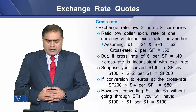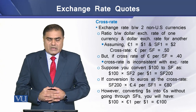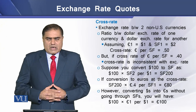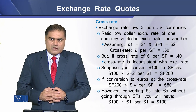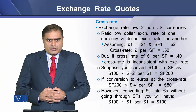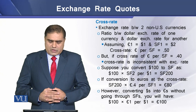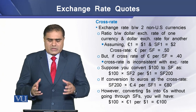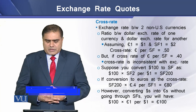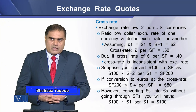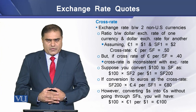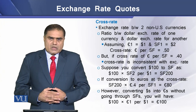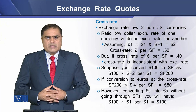By cross rate we mean the exchange rate between two non-US currencies. In other words, a cross rate is the rate between the dollar exchange of one currency and the dollar exchange rate of another currency. For example, if one euro equals one dollar and one Swiss franc equals two dollars, then the cross rate between euro and Swiss franc is equal to 0.50. But what if the cross rate of euro per Swiss franc is 0.40?